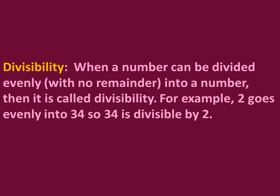Divisibility: when a number can be divided evenly with no remainder into another number, that is called divisibility. For example, 2 goes evenly into 34, and so 34 is divisible by 2. The system by which we check whether a dividend can be divided evenly by a divisor with no remainder is called divisibility. A number which can be divided evenly is said to be capable of divisibility.